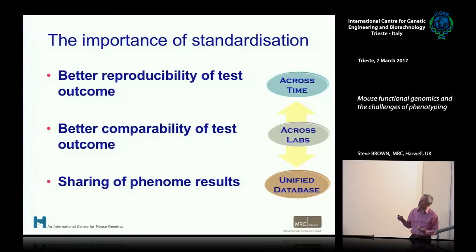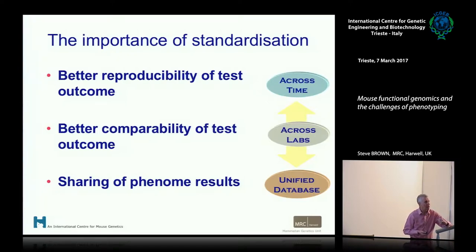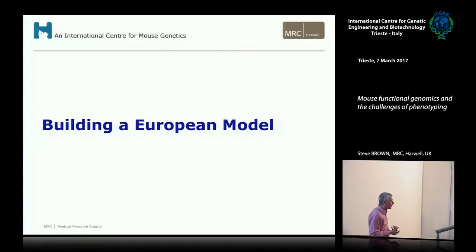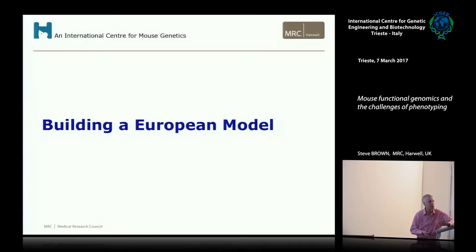The importance of standardization cannot be emphasized enough. We need reproducible test outcomes — there's a great conversation in the literature about how to make sure biological data is reproducible, and it will come through standardization. Better comparability of test outcomes across labs and across time allows us to share phenome results. In Europe, we spent a lot of time on two programs. The first is Eumorphia, where we built a European model to standardize tests and begin to apply those standardized phenotyping platforms to analyzing large numbers of mouse knockouts.